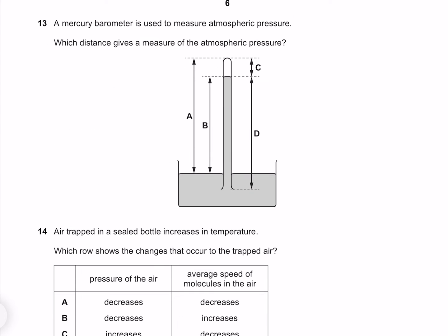A mercury barometer is used to measure atmospheric pressure. Which distance gives a measure of the atmospheric pressure? Because our pressure outside our barometer is greater than the pressure inside our barometer, we're going to see the mercury rise up. The distance that it rises up is our measure of atmospheric pressure, which is our distance B.